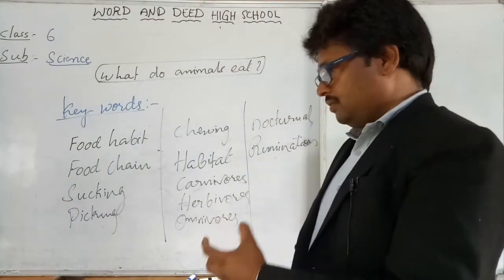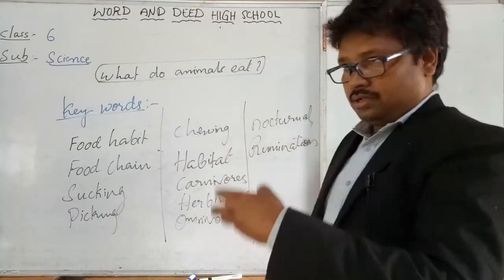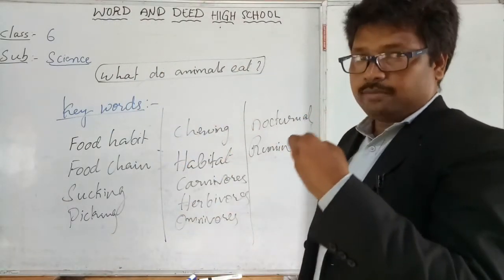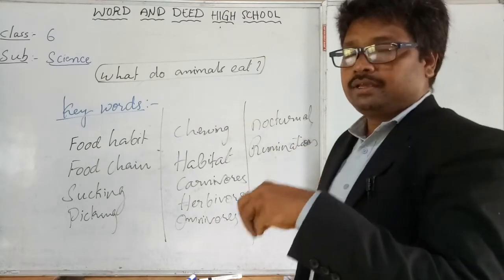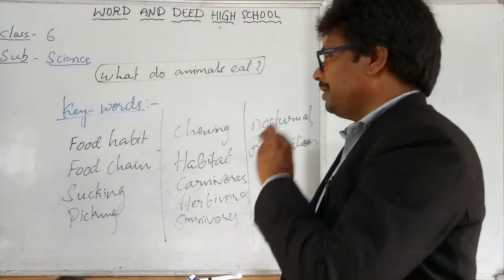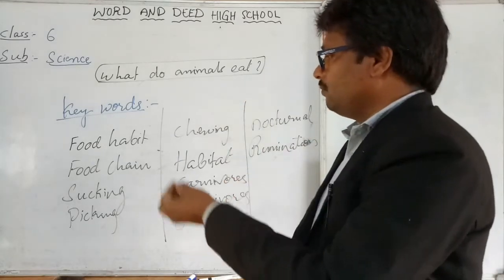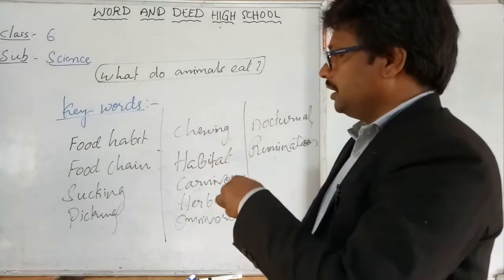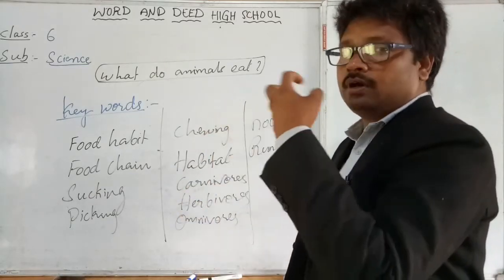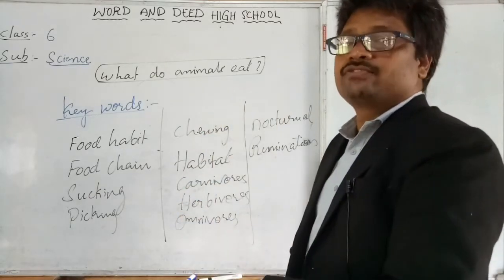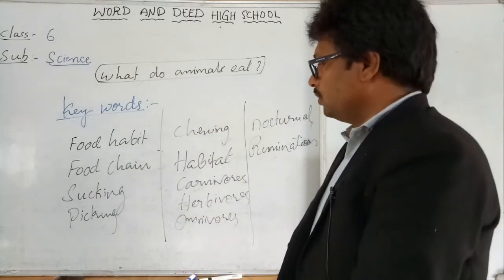What is food habit? The food that animals eat regularly is the food habit of that animal. And what is a food chain? It is the interdependence of living things for their food.